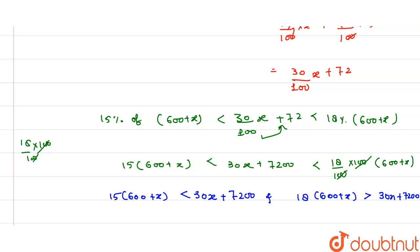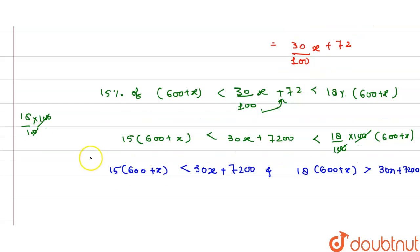Now solve both inequalities. We have 9000 + 15x less than 30x + 7200. Subtract 7200 from 9000, we have 1800. And 30x minus 15x is 15x.